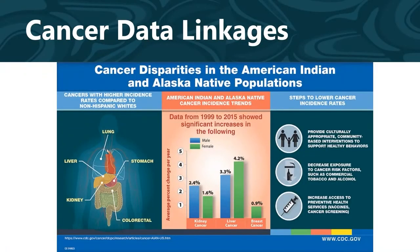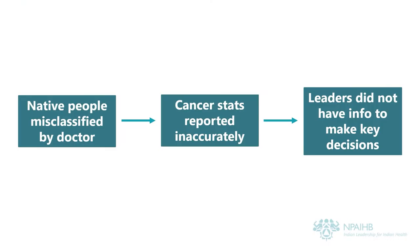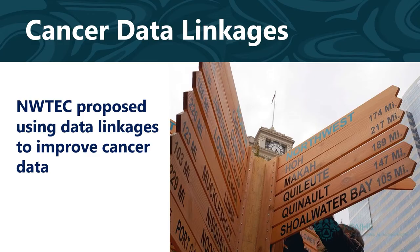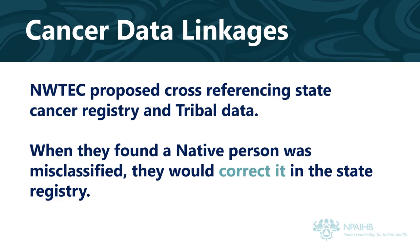In the 1990s, it became apparent that state cancer registries, where cancer statistics are housed for each state, tended to underestimate the burden of cancer for American Indian and Alaska Native people in the Pacific Northwest. Oftentimes, this was because Native people were misclassified as being white by their doctors. The result was that when state and federal cancer statistics were reported, tribal leaders did not have accurate information to make important policy and programmatic decisions. To address this, staff at the Northwest Tribal Epidemiology Center presented to tribal leadership about the possibility of using data linkages to improve the cancer data available. Northwest Tech staff proposed cross-referencing state cancer registry data with tribal data using special matching software.